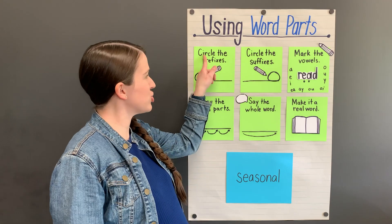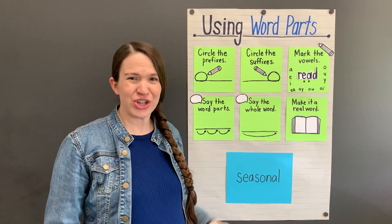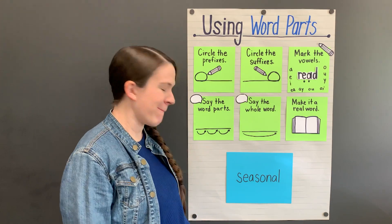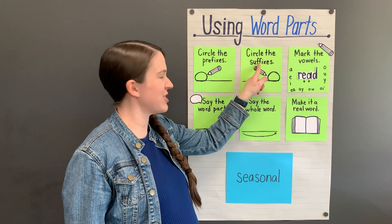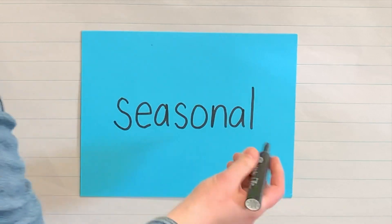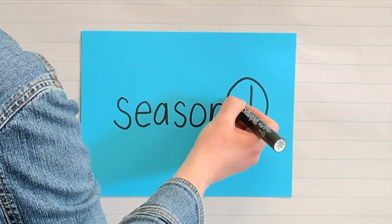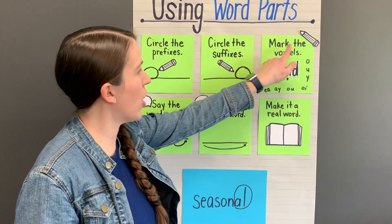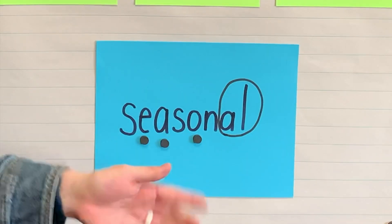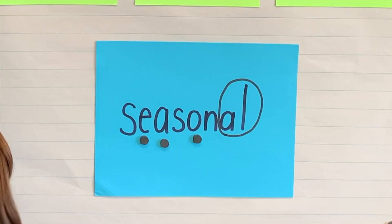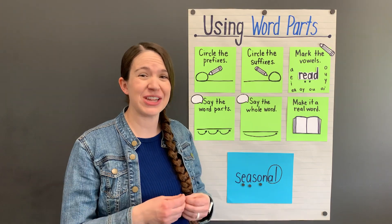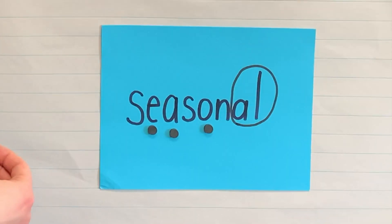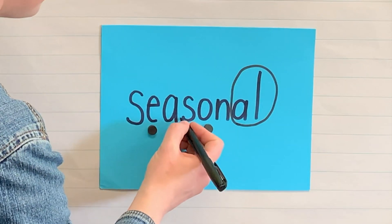Here's another word. First, let's circle the prefixes. Do you see any prefixes? There are no prefixes. So let's circle the suffixes — we see '-al' again. Now let's mark the vowels. 'Ea' will likely make one vowel sound and 'o' will make a second vowel sound, so we expect to find two syllables.